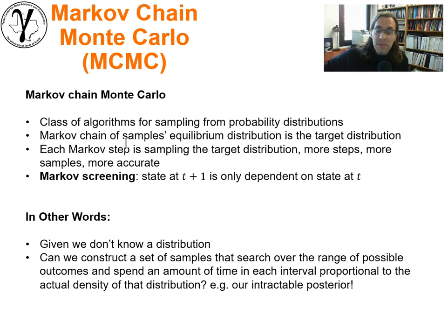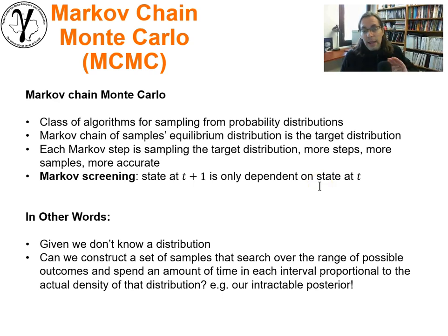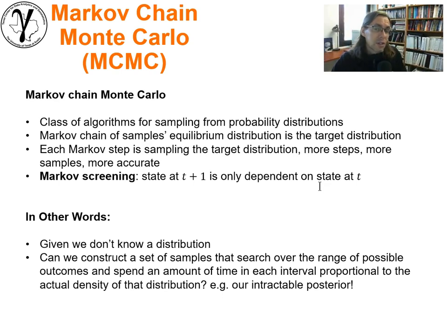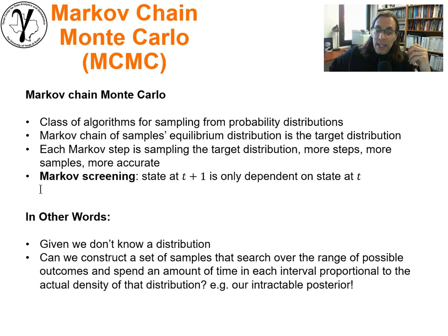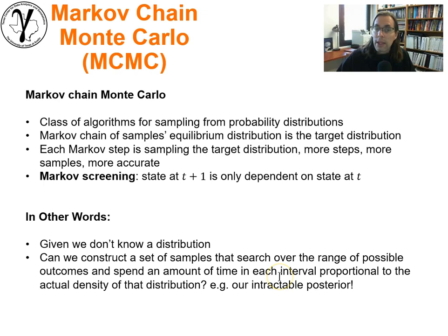We're going to rely on the Markov property. The concept is that the state of our sample t+1 is only dependent on the previous sample. We don't look at the history. The conditional probability of a current sample given all previous samples is only equal to the conditional probability of the current sample given the previous sample only. This methodology can be applied when we can't get to the distribution directly, but we want to construct a set of samples to search over the range of possible outcomes, and we need it to spend an amount of time in each interval proportional to the actual density of that distribution.